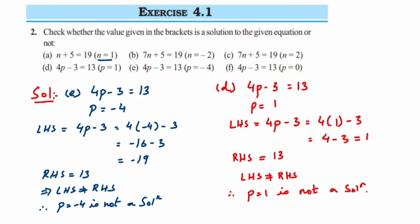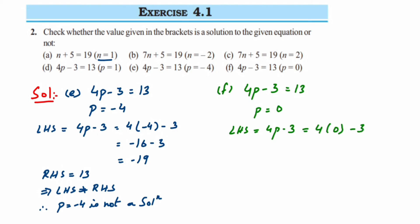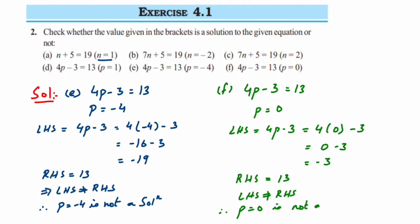The last question, part F, is 4P minus 3 is equal to 13, and P=0. For LHS, substitute P=0: 4 times 0 minus 3 gives 0 minus 3, which is minus 3. RHS is 13. LHS and RHS are not equal, so therefore P=0 is not a solution.